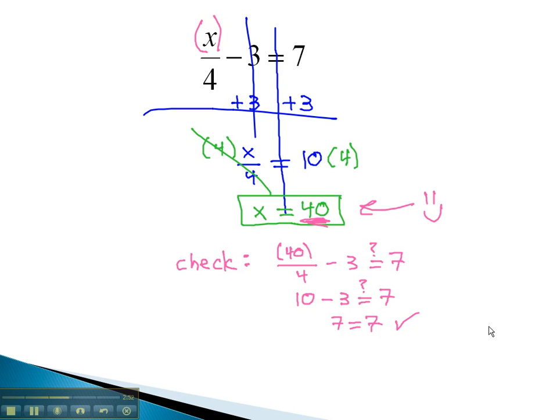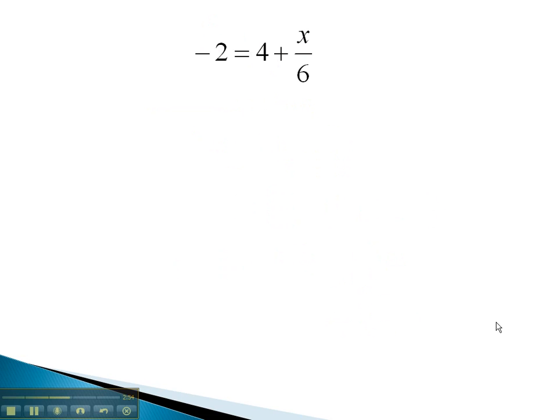Let's try one more example. In this problem, we have negative 2 equals 4 plus x over 6. Our goal is always to get the x alone by moving the other stuff out of the way. We have an over 6 and a positive 4. We always get rid of the standalone number first, that positive 4, and we get rid of those 4 positives with 4 negatives on both sides. Negative 2 and negative 4 is negative 6, which is equal to x over 6.